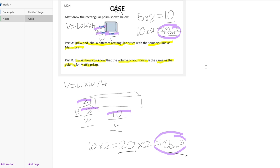So the last step in CASE is E, which means explain. That's pretty much what B is asking me to do. Explain how you know that the volume of your prism is the same as the volume for Matt's prism. The volume of Matt's prism was 40 cm cubed, and the volume of my prism was 40 cm cubed. So I know that the same number of cubes fits inside each of these prisms. I can cross off my E for explain.